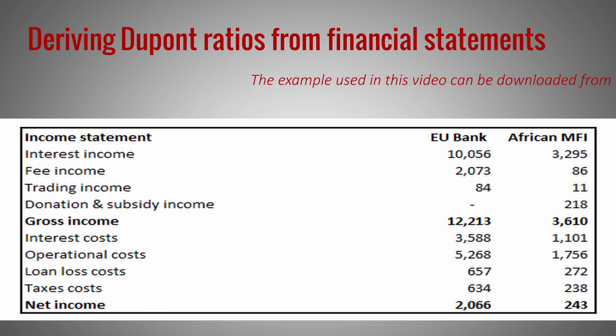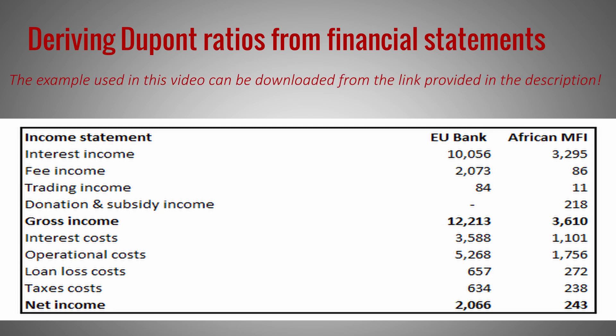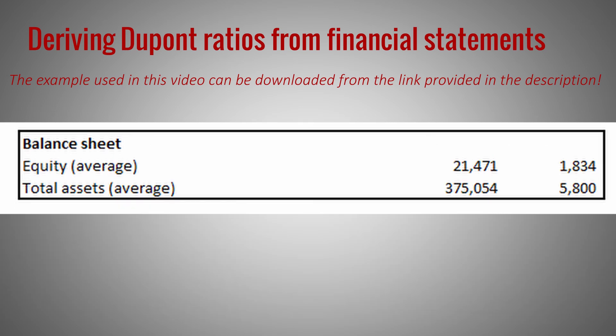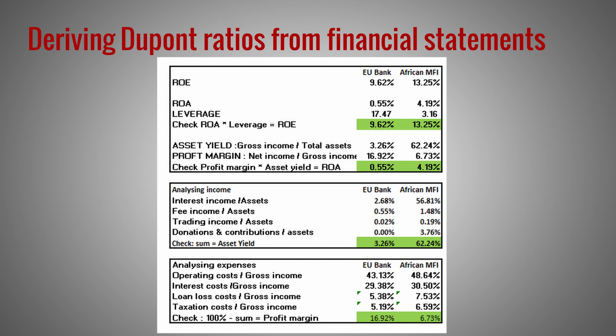We compare a larger European commercial bank with a smaller African microfinance bank. Obviously, these financial institutions are different in character and business model. Also, the currencies these statements are in do not matter since we are comparing ratios. The data provided just serve as an example of how to apply the Tebow-Coach framework. From the balance sheets we only need the total assets, which is the same as the balance sheet total, and the equity. For both banks, we now calculate the ratios we have discussed above and put them into an overview.